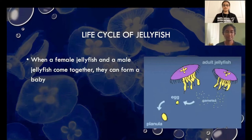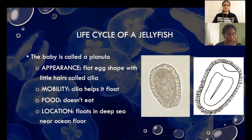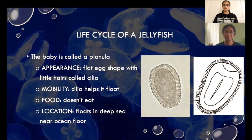When a female jellyfish and a male jellyfish come together they can form a baby. The baby that forms is called a planula. The planula looks like a little flat egg with little hairs called cilia. Cilia is what helps it float around. The planula doesn't eat because it only floats around for a few days before it continues on to the next part of its life cycle. It floats in the deep sea near the ocean floor in preparation for the next stage. On the right is a diagram and a real life image of what a planula looks like — an oval shape with small hairs around it.